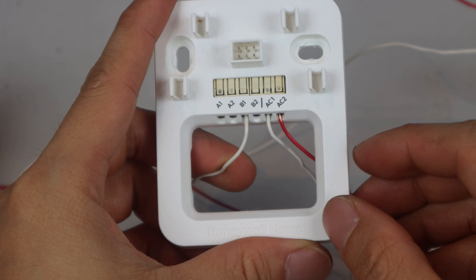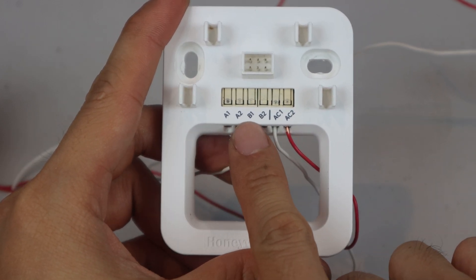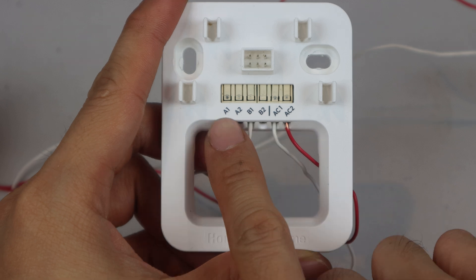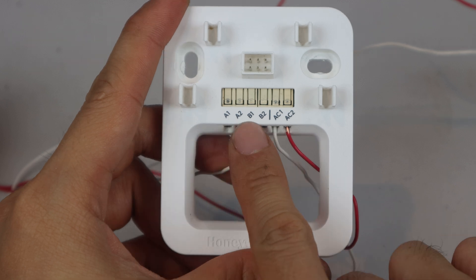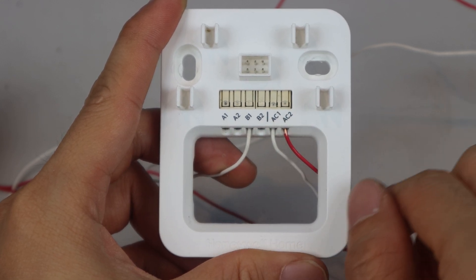If you only have one doorbell, like I do, you should be able to use either slot A1 or B1. However, I found that my A1 slot doesn't work properly, so I'll be using B1 instead. The other two terminals you'll need are AC1 and AC2.